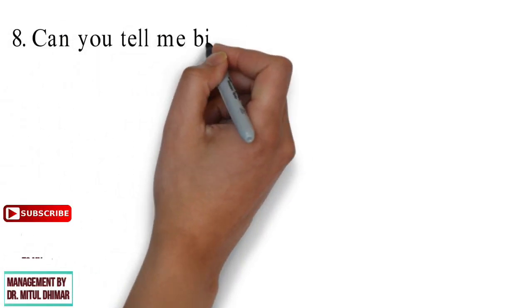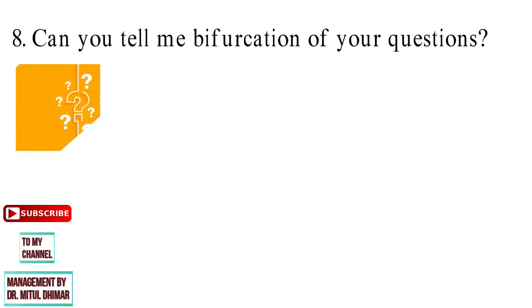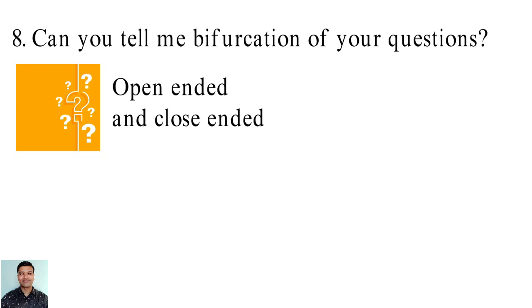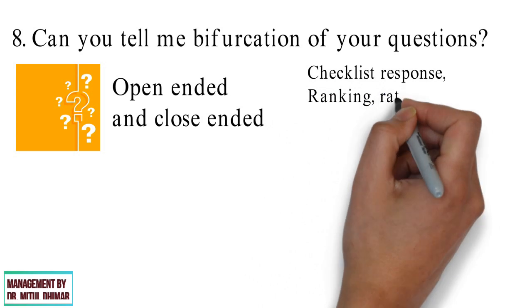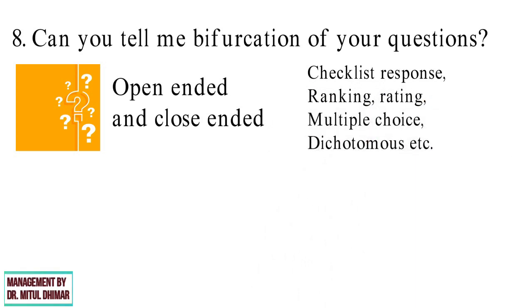Question number 8: Can you tell me bifurcation of your questions? Basically there are two types of questions, open-ended and close-ended. In close-ended we have many types like checklist response, ranking, rating, multiple choice, dichotomous, etc. We need to give answer as per type of questions we had used in our research.